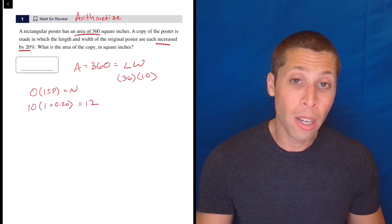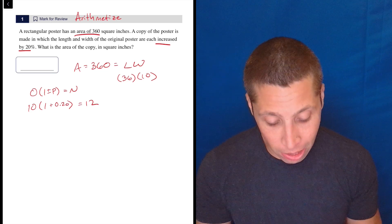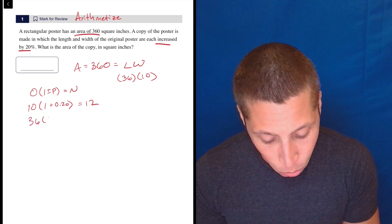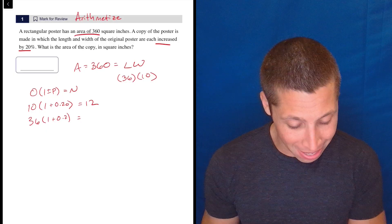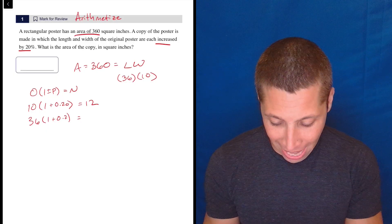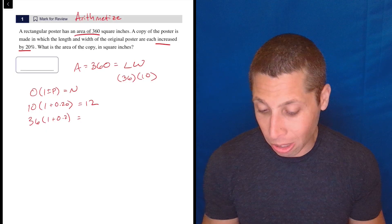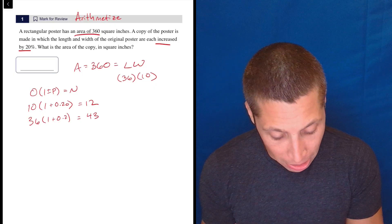So that is my new width. Okay. And if I do the same thing for the length, one plus 0.2 here, I would use a calculator because that one I'm a little less confident on in my head. So 36 times 1.2 is 43.2.